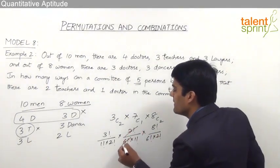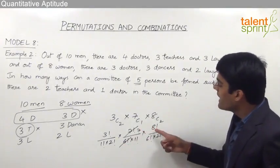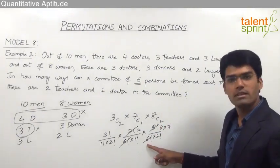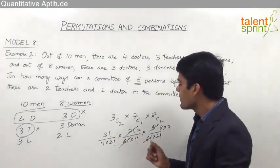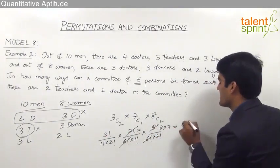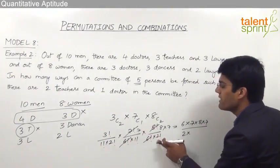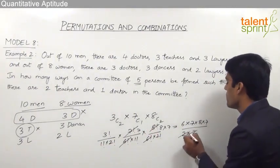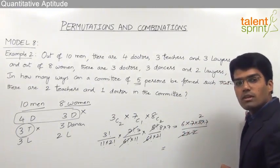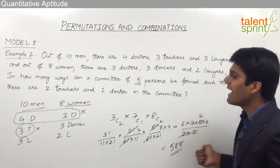Simplifying: 7C1 equals 7. For 8C2, since 8 factorial divided by 6 factorial equals 8 into 7, and 2 factorial is 2, that gives 8 into 7 divided by 2. For 3C2, that equals 3. So we get 3 into 7 into (8 into 7 divided by 4), which simplifies to 6 into 7 into 2 into 7. That is 42 into 2 equals 84, and 84 into 7 equals 588. So there are 588 possible committees with 2 teachers and 1 doctor.